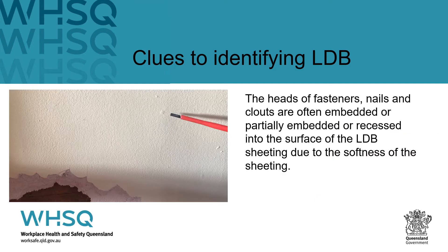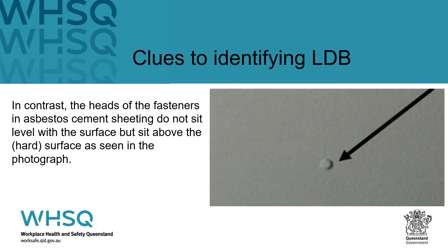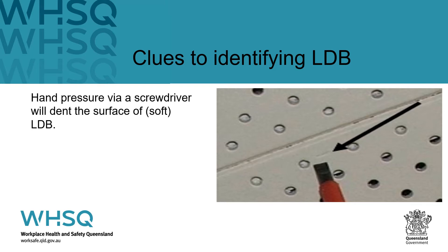Flex sheet nails and cloud head nails will often be embedded, partially embedded, or recessed into the surface of LDB sheeting due to its softness. In contrast, the heads of fasteners in asbestos cement sheeting do not sit level with the surface but sit above it. Using a flat head screwdriver with light pressure will leave an indentation on the surface of LDB, whereas using the same method on AC sheeting will leave no indentation.